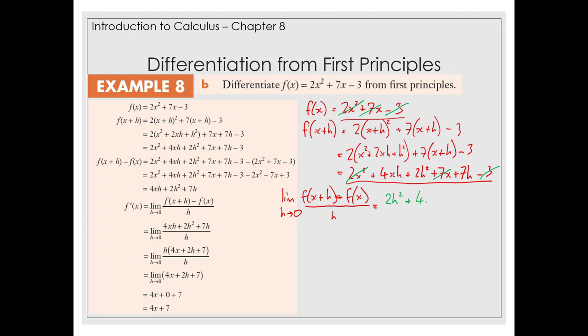All over h, and we can cancel those h's, so we can get rid of that one and that one and that one. So what we're left with is the limit as h approaches 0 of f'(x) is equal to 2h + 4x + 7, and then as h approaches 0, that's just going to equal 4x + 7.